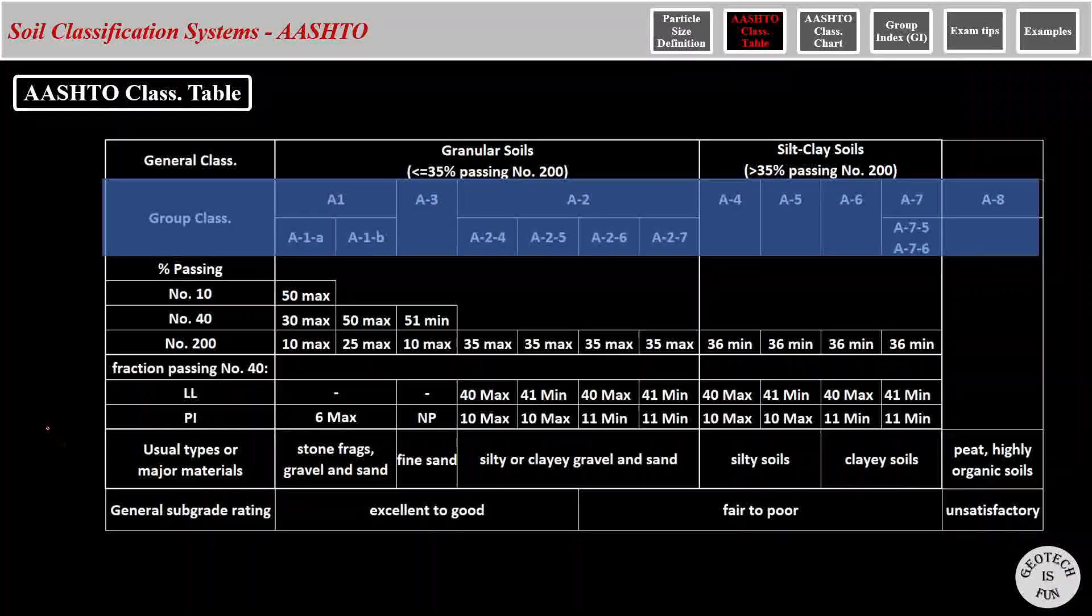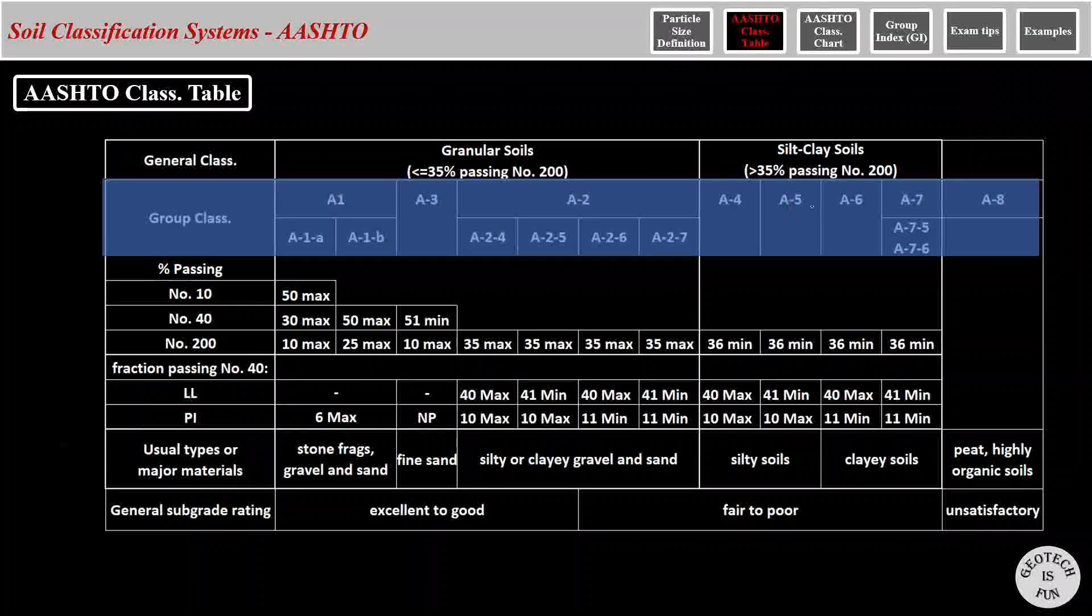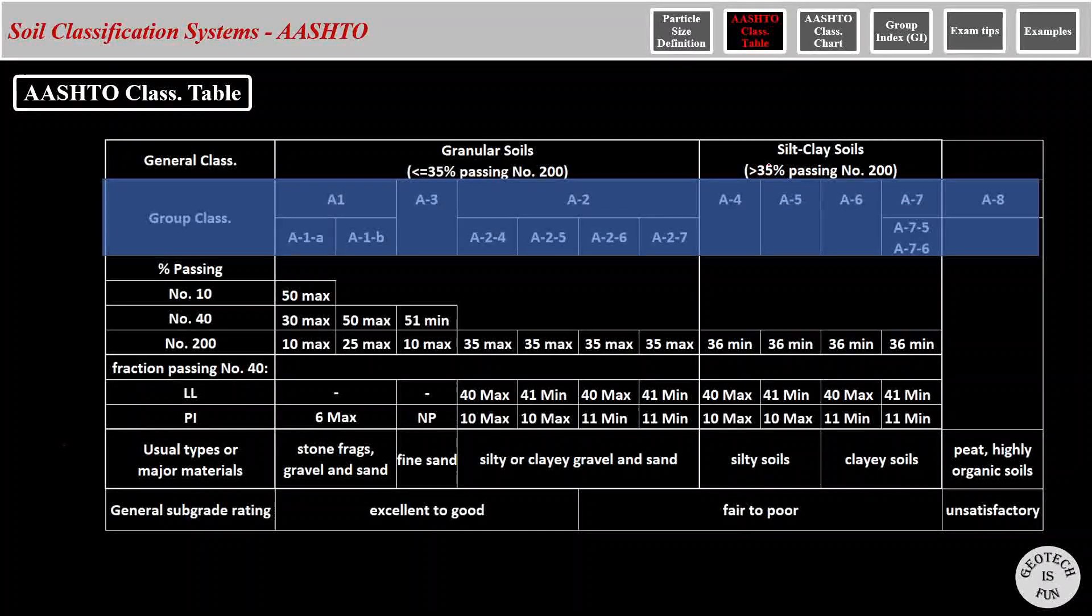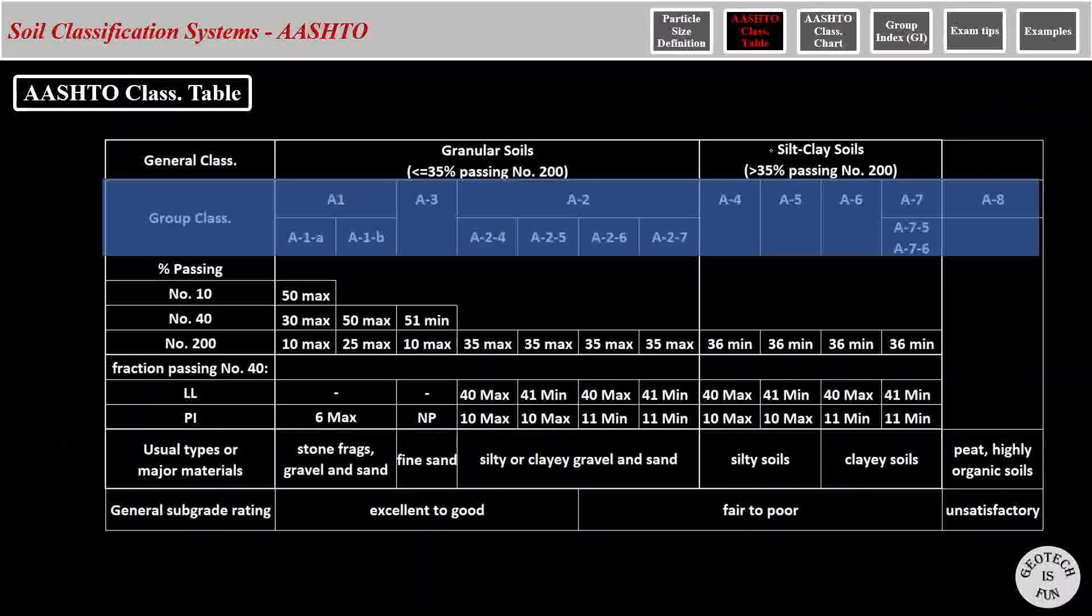At the top of the table on the second row, the group classifications are listed, which are A-1s, A-3s, and A-2s for granular soils, and A-4, A-5, A-6, and A-7s for silty clay soils or cohesive soils, and finally A-8s, which is peat and highly organic soils.